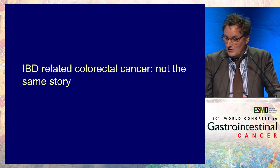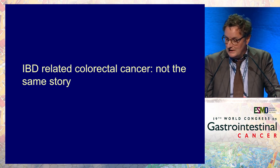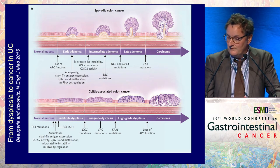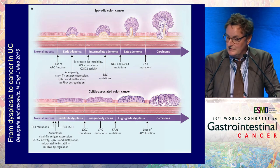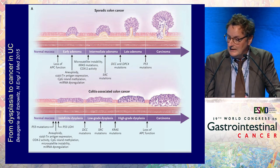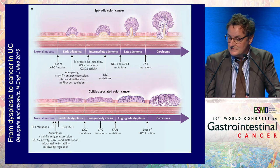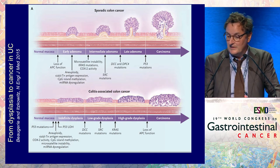IBD-related colorectal cancer and sporadic colorectal cancers do not have the same natural history. The natural history of sporadic colon cancer starts with early adenoma, then goes to intermediate adenoma, to late adenoma, and then to carcinoma. The natural history is different in colitis-associated colon cancer: it starts with inflammation.